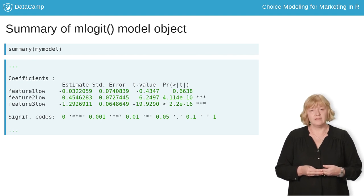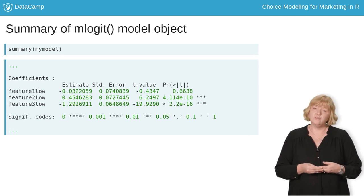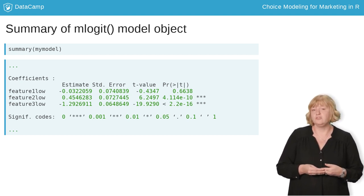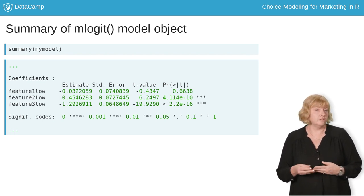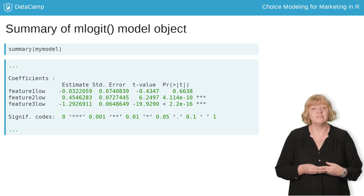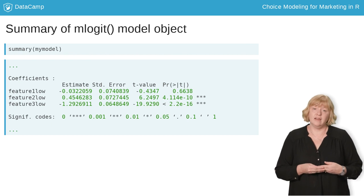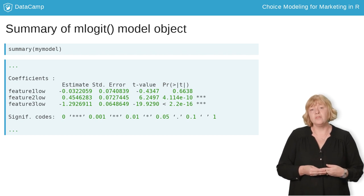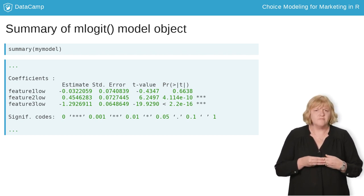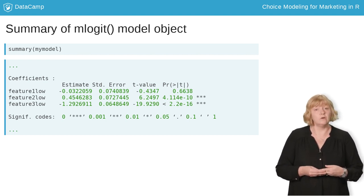The numbers in this column represent the relative value that customers place on each feature. For example, the coefficient for feature 3 low is negative 1.29, which means that people prefer the high level of feature 3 to the low level. Just like with linear regression, the stars on the right-hand side indicate which features have a statistically significant effect on choice. Parameters that are more than 1 or less than minus 1 indicate a very strong preference for a feature. The closer the coefficient is to 0, the weaker the preference.